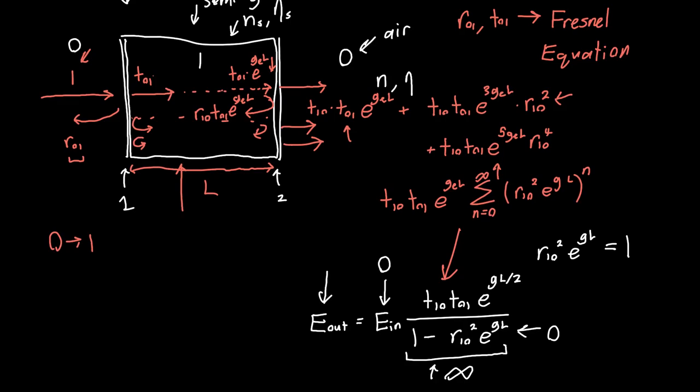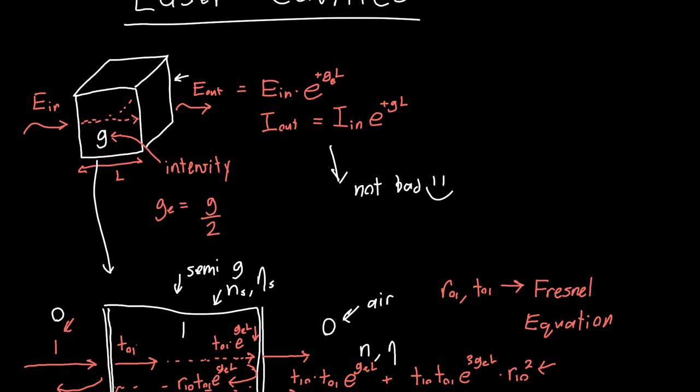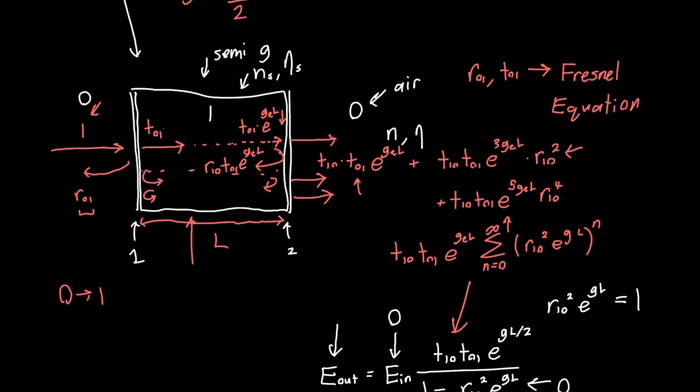And compare this to our initial just sending light through a gain medium. We just multiplied by this constant, which compared to infinity is pretty good if our goal is to get as much light out of this thing as possible.